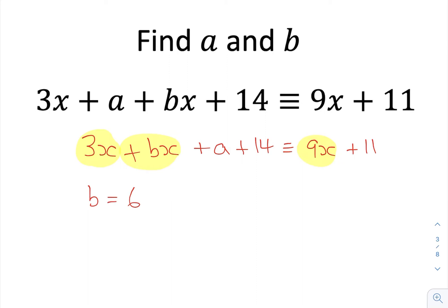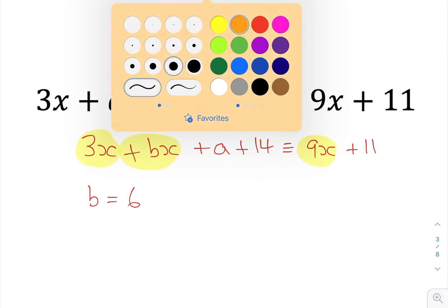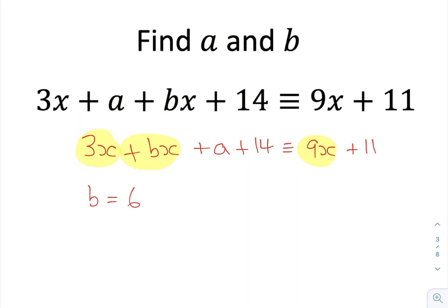I could have written that out more formally, but I probably don't need to at this point. Then also putting the terms without any algebra and just the numeric terms together, we've got a plus 14 must be equal to 11. I will write that one out just to make sure we get this one the right way around. a plus 14 is the same as 11. So if I solve that, subtracting 14 from both sides, I get that a is negative 3. And that's the values of a and b found.